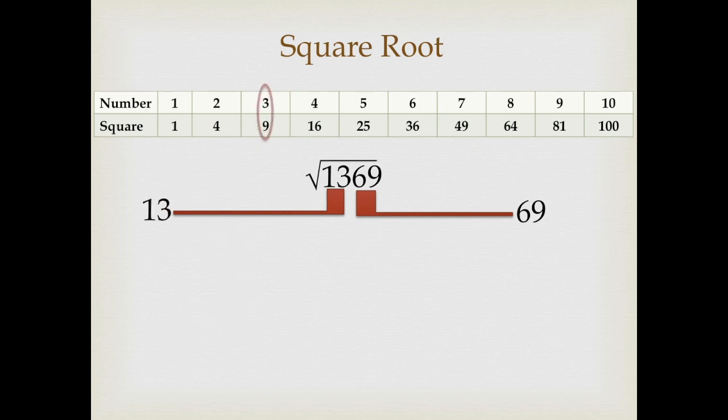Now, 13 lies on 3 and 4 between 9 and 16. In this case, we always take the lesser number among the two numbers. 3 is the lesser number than 4. Write down 3.